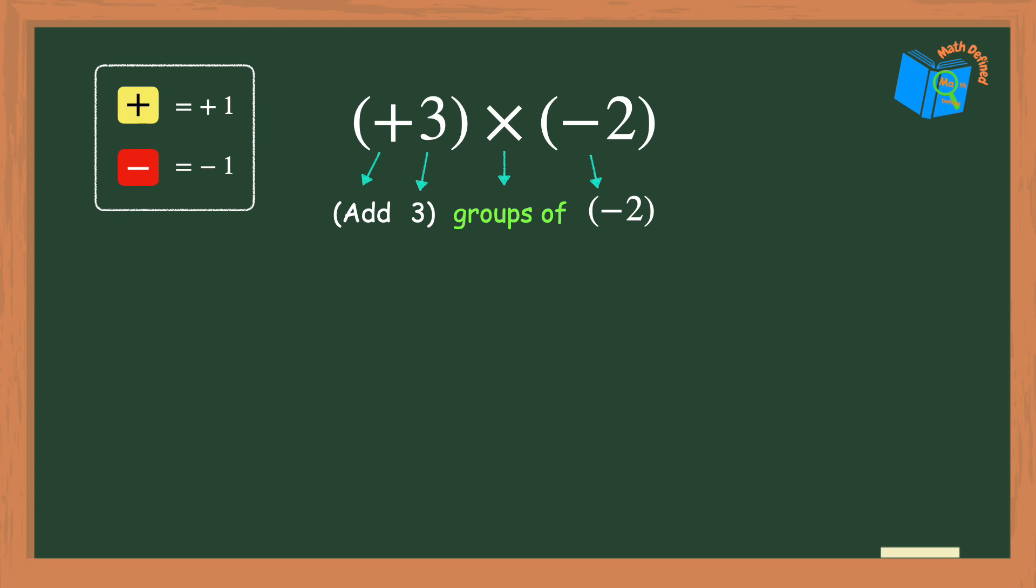Since the 2 is negative I will need to use the red or negative counters. So here is my first group of negative 2, the second group of negative 2, and finally the third group of negative 2. And that's it.